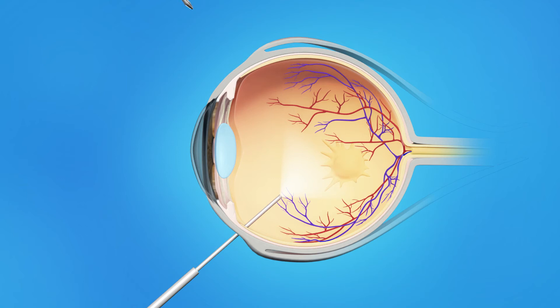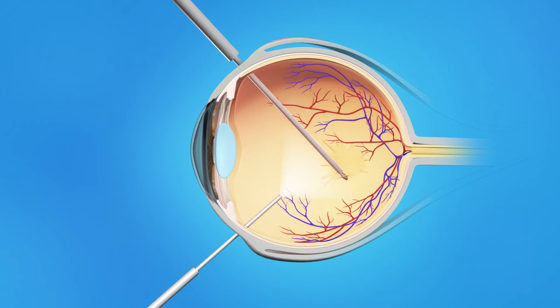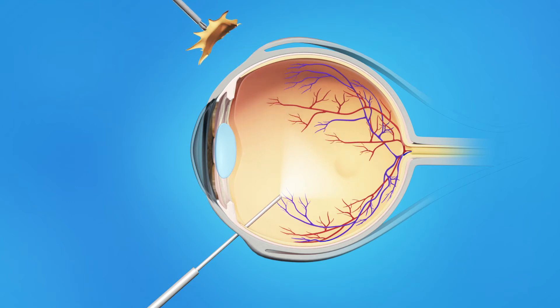Your ophthalmologist will repair your macular pucker with vitrectomy surgery. This procedure is done in an operating room. To perform a vitrectomy, your ophthalmologist makes tiny incisions in the sclera, or white of the eye. Using microsurgery instruments, your eye surgeon removes the wrinkled tissue on your macula, as well as the vitreous gel that may be pulling on the macula.